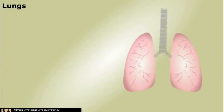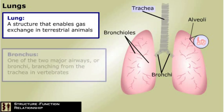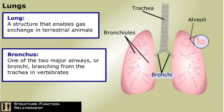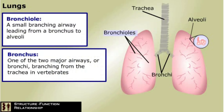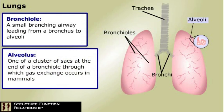Gas exchange in land-dwelling vertebrates takes place in the lungs, chambers that are lined by moist epithelium with capillaries underneath. In mammals, air enters the lungs through a single trachea. The trachea branches first into two bronchi, and then branches many times into smaller tubes called bronchioles. The smallest bronchioles end in alveoli, clusters of air sacs lined with a watery film. Gas exchange occurs by diffusion between alveoli and networks of capillaries.